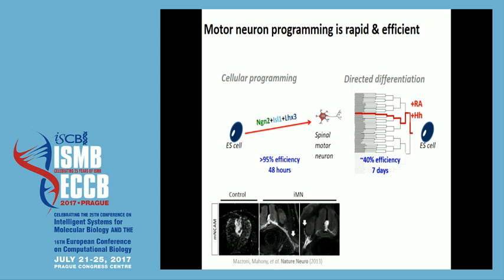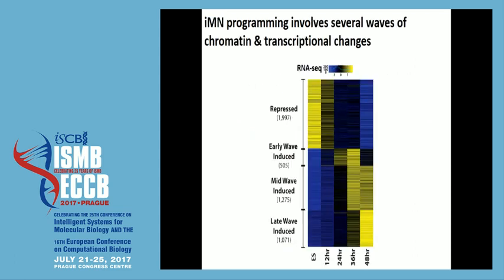What I'm interested in is what the transcription factors that we're overexpressing are doing in this system and how they're bringing about this conversion of cell fate. Although we call it a direct programming approach, it's not exactly direct — it's not a one-step process. Most of the repression happens quite soon after overexpression of the transcription factor module, but there are several waves of induction of genes within this short time course. The question to us is what these transcription factors are doing with respect to these genes that are getting activated at different time points.